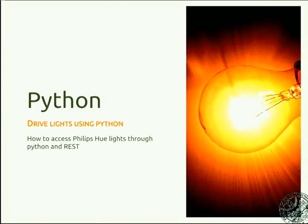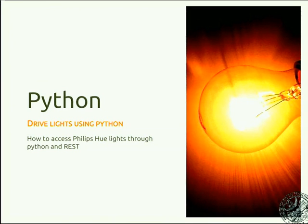We'll get to the second part of today. As in the last Thursday, we're going to see how to make some practical application in Python. In this case, the goal of today is to exploit part of the things we learned last week, especially on the client side, to try to control a Hue bulb, which is here.